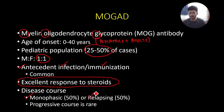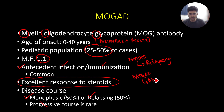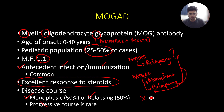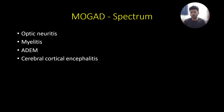Regarding disease course, 50 percent of patients are going to have a monophasic illness and another 50 percent are going to have a relapsing illness. Remember that unlike multiple sclerosis, progressive forms are not seen. When it comes to NMOSD, it is usually a relapsing illness — it's very unusual for NMOSD to be progressive or monophasic. MOGAD can be either monophasic or relapsing, but both NMOSD and MOGAD are very unlikely to have progressive forms, which are usually seen in multiple sclerosis.